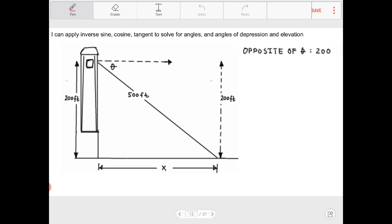So if I were to label the 200 here, I immediately notice that 200 is opposite of theta. I also recognize the hypotenuse is going to be my 500. So because I have opposite to hypotenuse, I'm going to use sine.